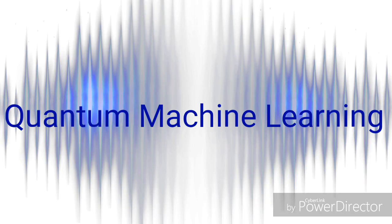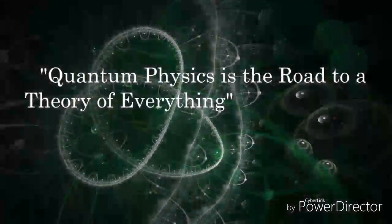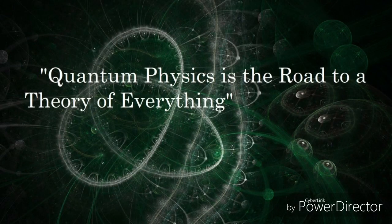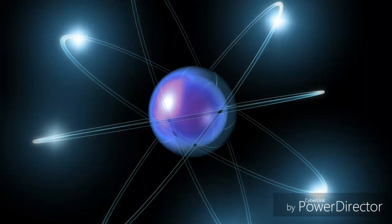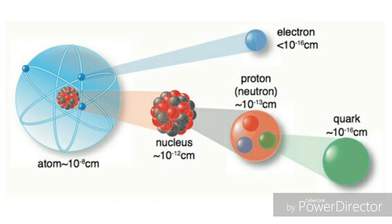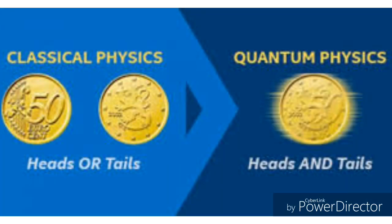Hello, this is Arpan Gupta, and in this video I will talk about the foundation of quantum machine learning, which is quantum physics. Quantum physics describes the behavior of very small particles like atoms and electrons. We know that matter is made of atoms, and atoms have electrons in them along with other microscopic particles. We will consider the electron and discuss quantum physics to understand what quantum behavior it shows.